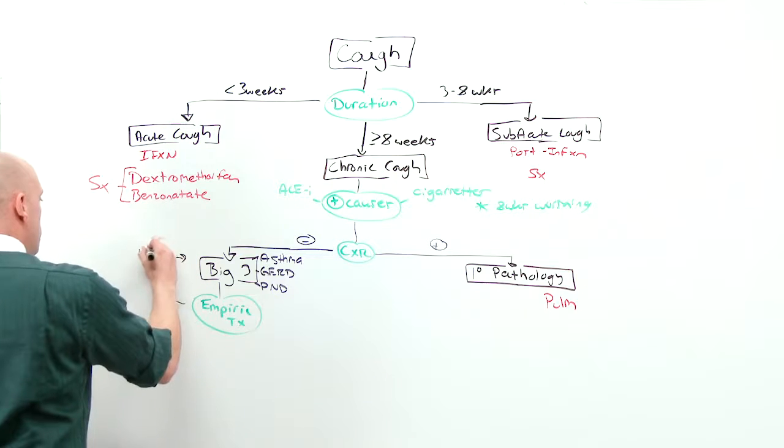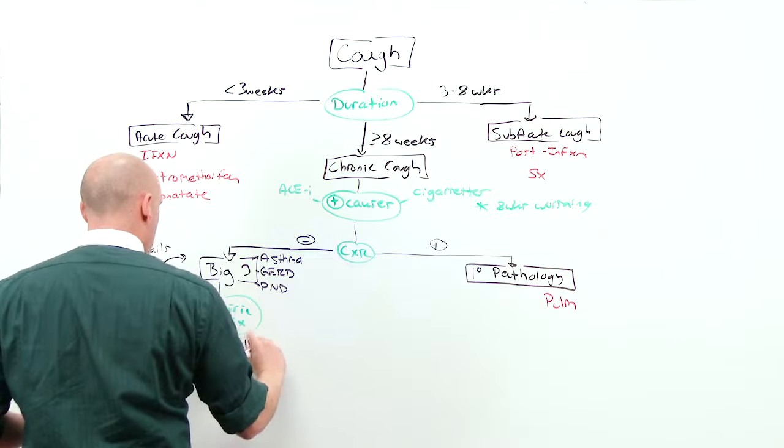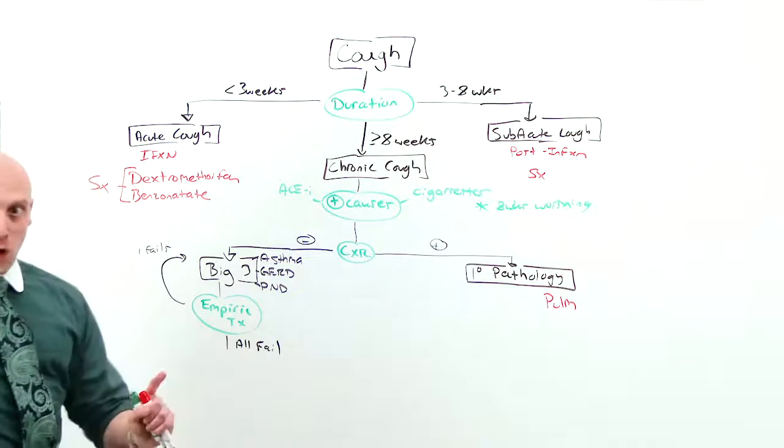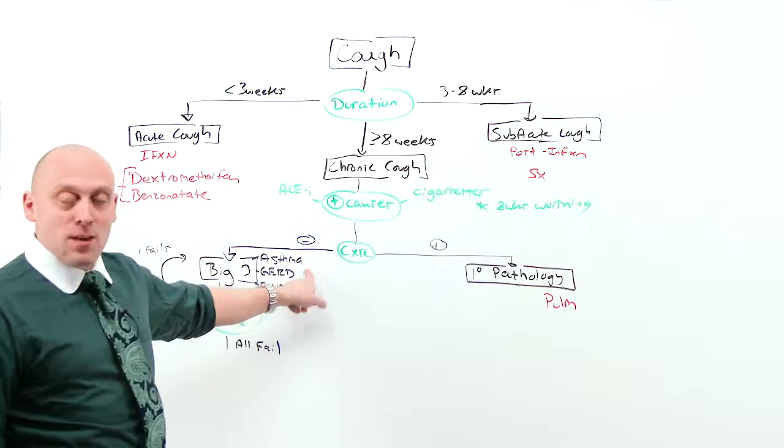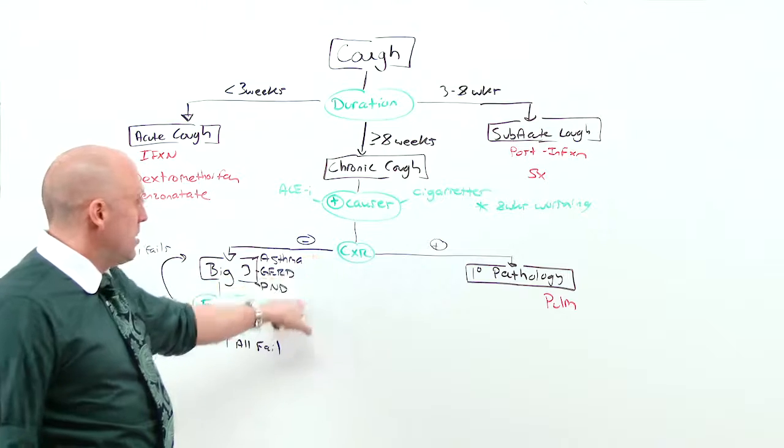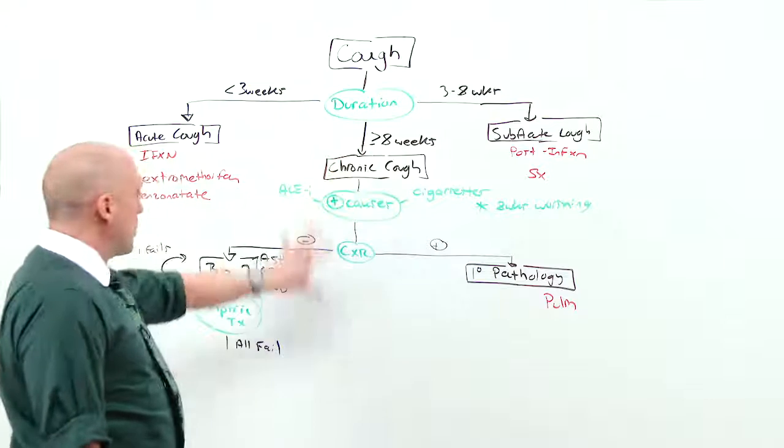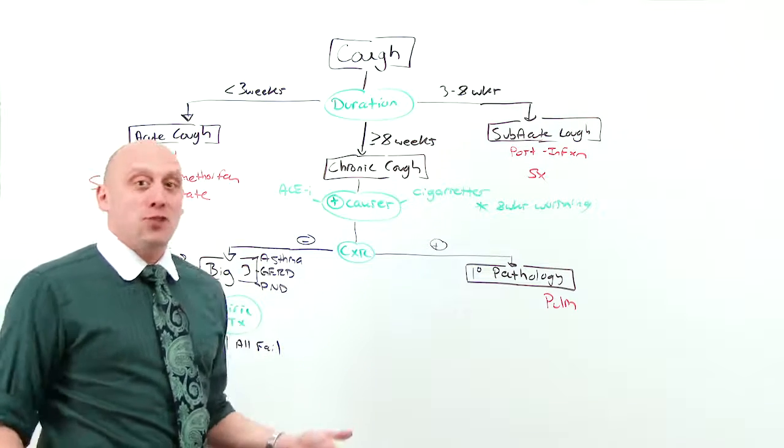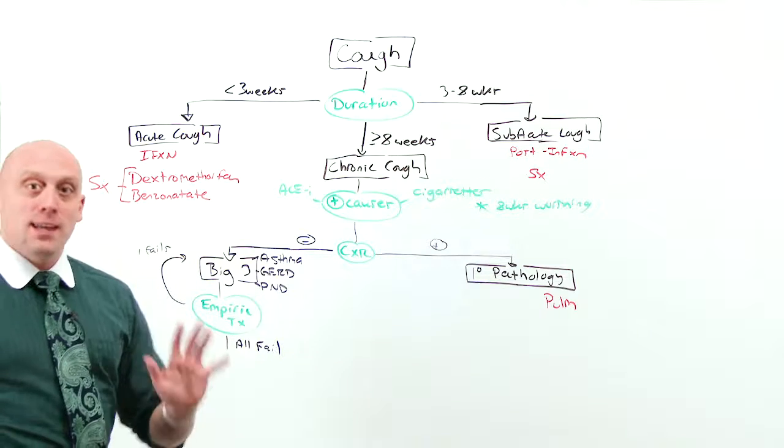If one fails, you try another. If they all fail, and they still have a cough, and keep in mind, this means that they're going to give them about an eight-week course of each thing to make sure that they're taking it right. So you already had eight weeks of them coughing. And now you're going to go another 24 weeks. You're almost at over half a year before you finally say, okay, we've really tried everything. Now what?